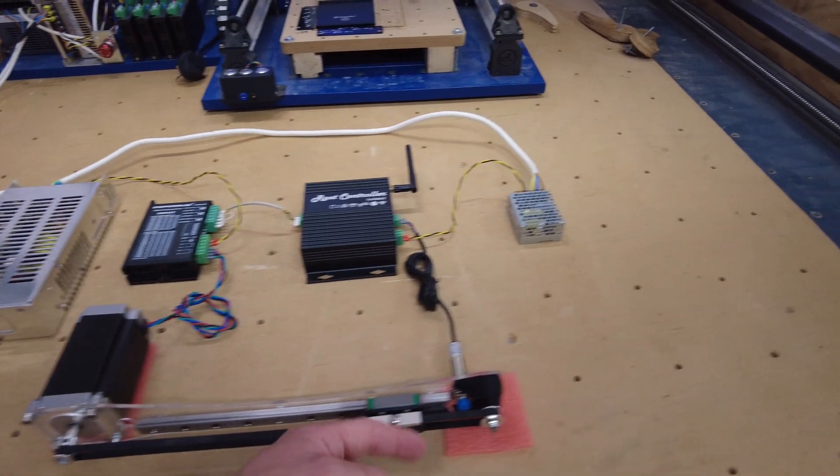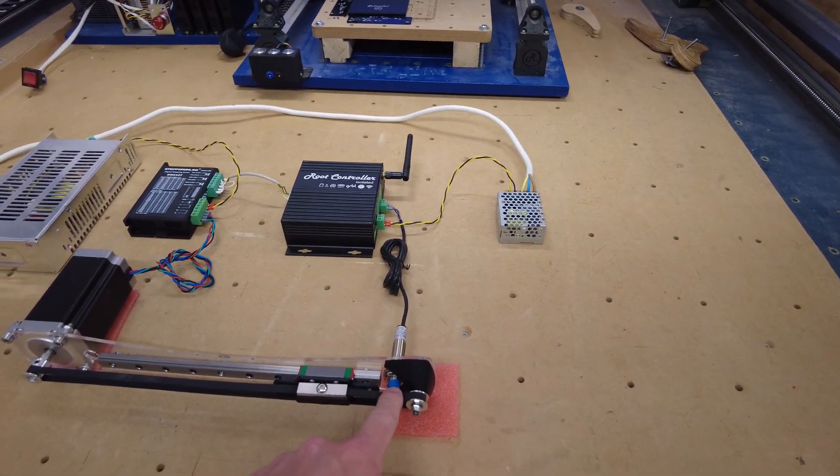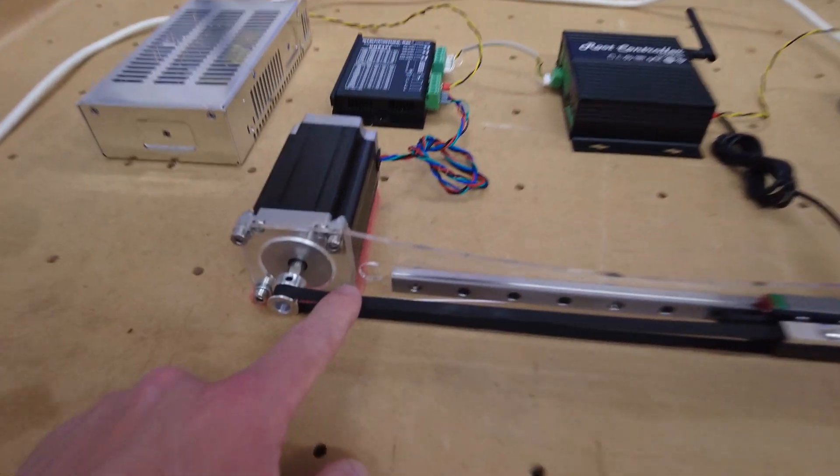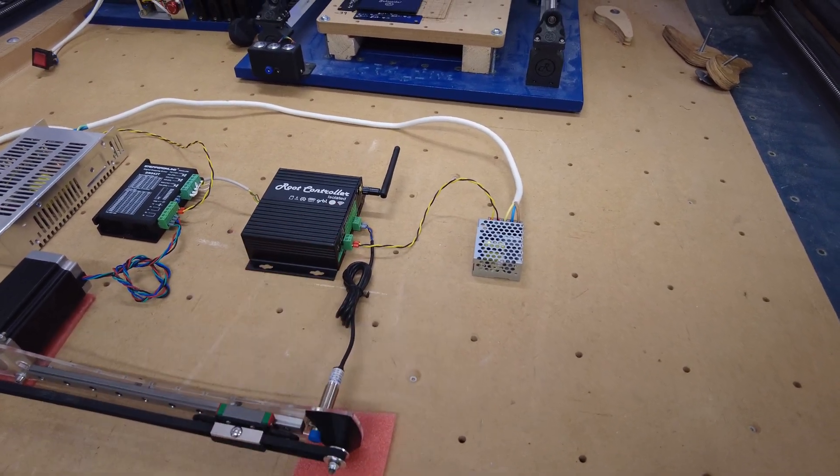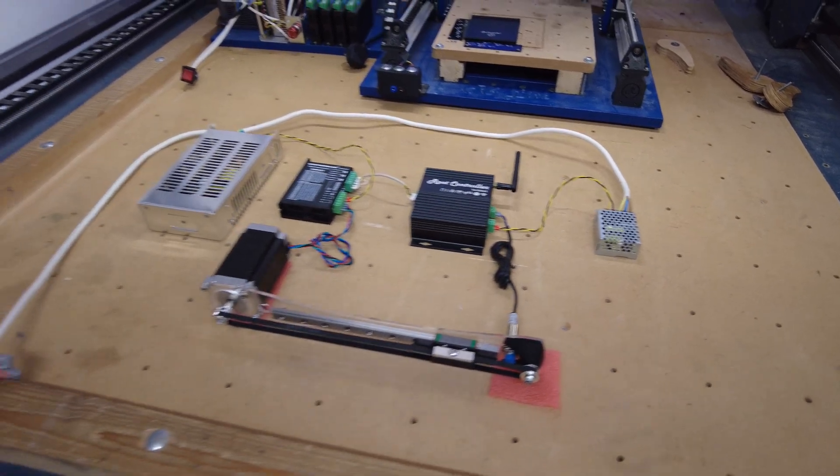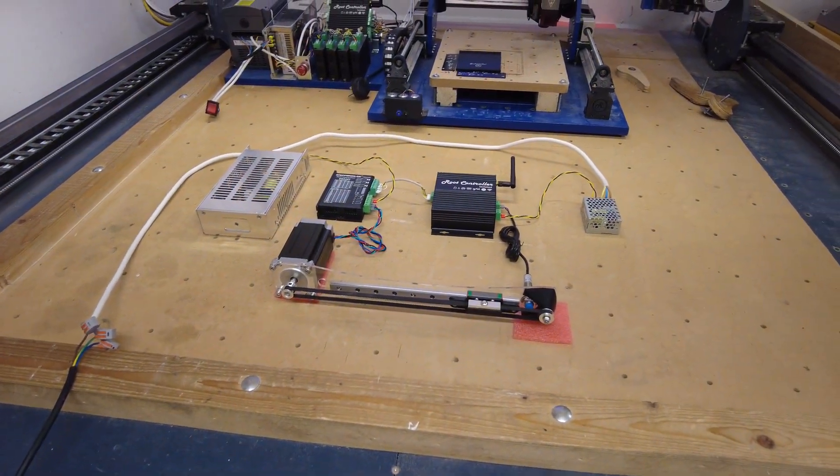If you want to add more, you just add more drivers, more wires to the Root controller, and then more axes. Similarly for the end stops, we've got a max here but we could also have a min over here. We can easily connect up and parallel them in the Root controller. More information on the wiki.